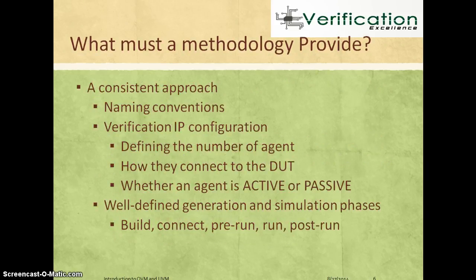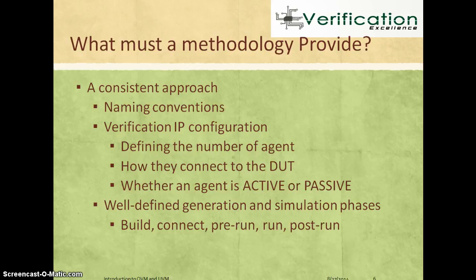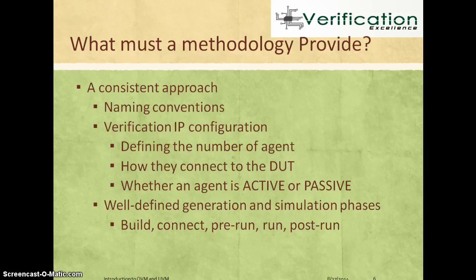The methodology should provide a consistent approach, specifically in terms of naming conventions and how to configure different verification IPs — for example, how to configure the number of agents, how verification IPs are connected to the DUT, whether an agent is active or passive, etc. This is important because if everybody develops their own verification IPs with their own ways of configuring or connecting them to the DUT, these IPs cannot be combined when building a higher level verification environment. The methodology should also provide well-defined generation and simulation phases; examples that OVM and UVM use include build, connect, pre-run, run, and post-run phases, which are especially important when building class-based testbenches.